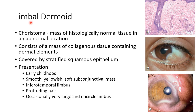A limbal dermoid is a choristoma, meaning it is a mass of histologically normal tissue in an abnormal location. It consists of a mass of collagenous tissue containing dermal elements, covered by stratified squamous epithelium.